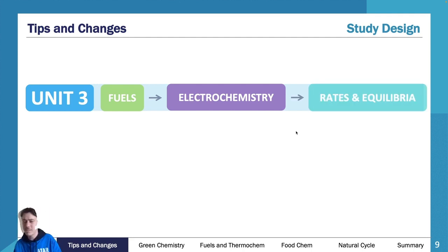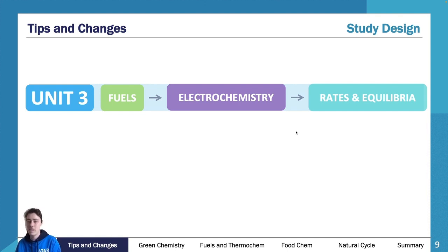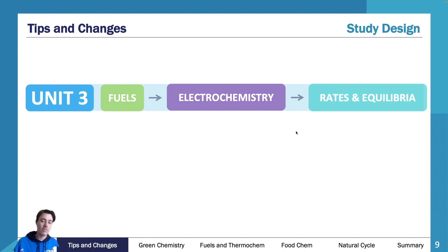Electrochemistry is broken up into two parts. The basics are with the fuels unit, and then the advanced electrolysis is with rates and equilibria. It's a bit frustrating to learn because you do fuels, go into a little bit of redox, then continue into rates and equilibria before coming back to do more electrolysis. That's how those two area studies fit together.